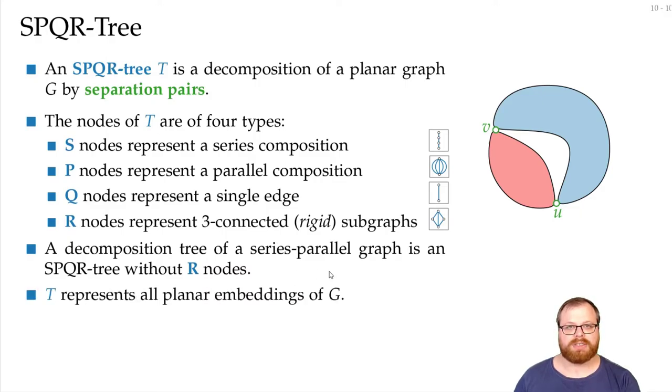With such an SPQR tree, we can represent all planar embeddings of the graph. Because exactly at these P nodes, we have the choice to flip the order. We can do all these components in any order we want. But the rigid stuff, it's reconnected, there's a single embedding.